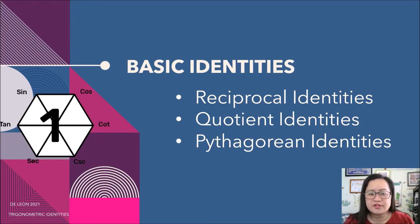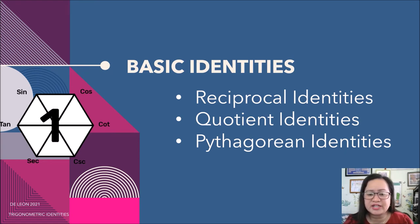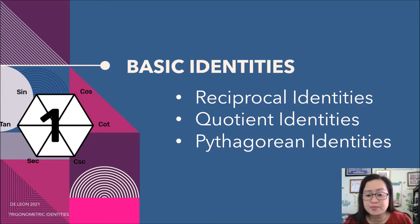Aside from the identities for the negatives, we also have the basic trigonometric identities. These are the reciprocal identities, quotient identities, and the Pythagorean identities.